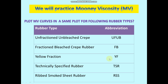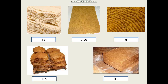The first question was to plot Mooney curves for the following rubber types. There are five different types of rubbers given: unfractionated unbleached crepe rubber, fractionated bleached crepe rubber, yellow fraction, technically specified rubber, and ribbed smoked sheet rubber. Here are the abbreviations. Before answering, we will see some pictures of these rubbers. This one is for fractionated bleached crepe rubber — it is white in color.